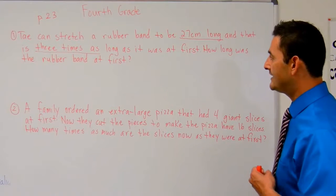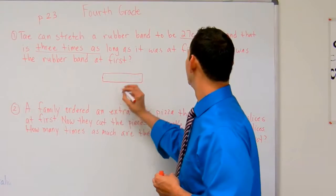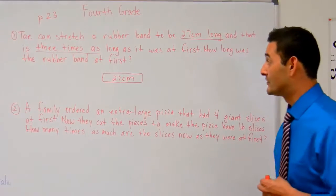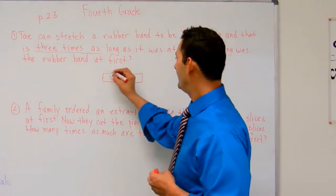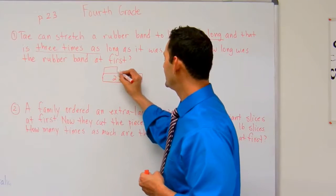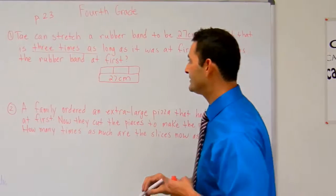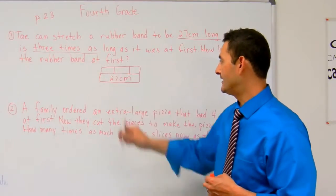Here we have, take and stretch a rubber band to be 27 centimeters long, and that is 3 times as long as it was at first. So at first, it was probably about that big. The key word is there, that it was 3 times as long.